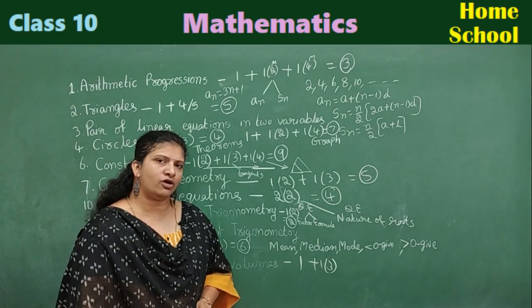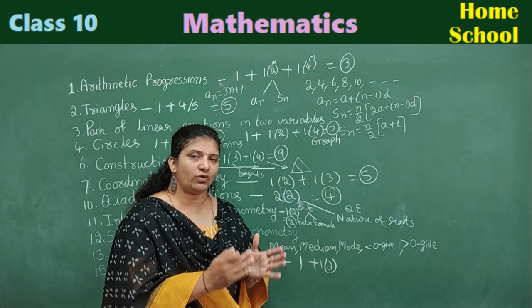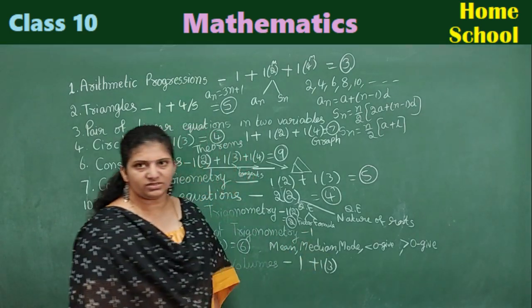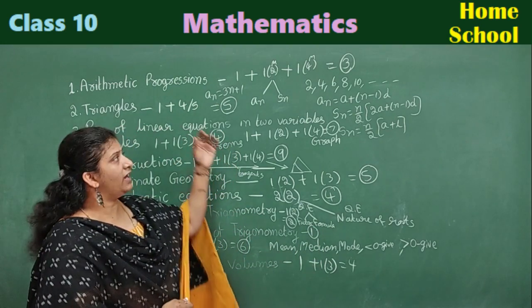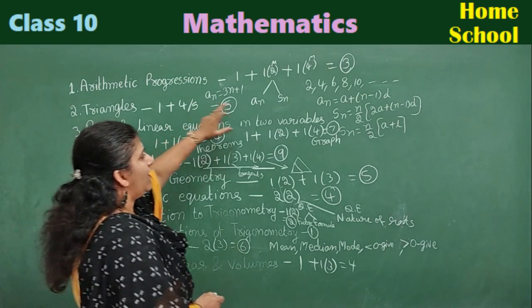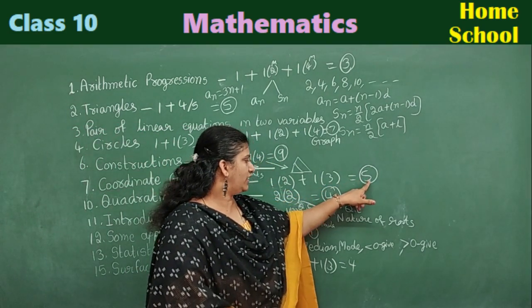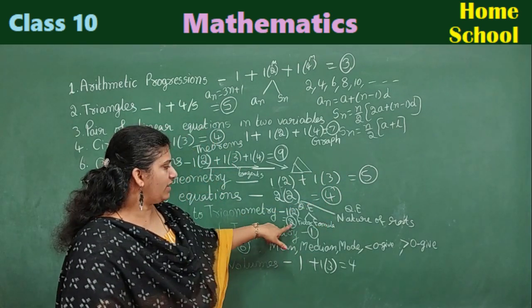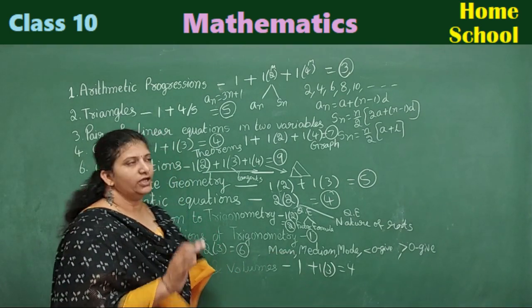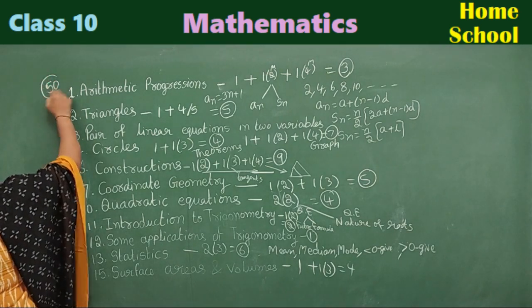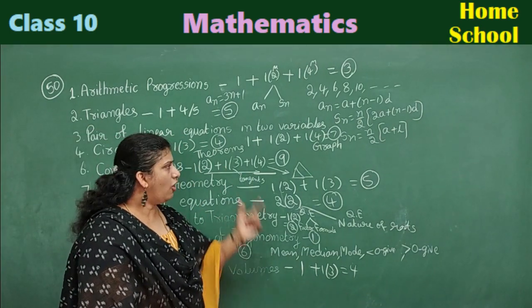For Some Applications of Trigonometry, even if you cannot fully solve the problem, writing the given data from the question can earn you one mark. Total from Surface Areas and Volumes: four marks can be guessed. Adding all chapters together: the total comes to approximately 50 marks. If you are perfect with all these types of problems, you can score 50 marks from these guessed questions.